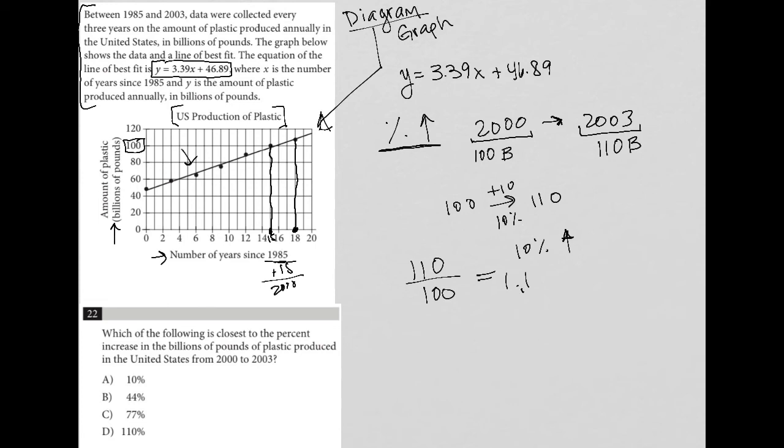110 divided by 100 equals 1.1. This is really like 1 plus 0.1. The 1 represents 100%, the 0.1 represents 10%. This is the increase above the 100% that you started off with.